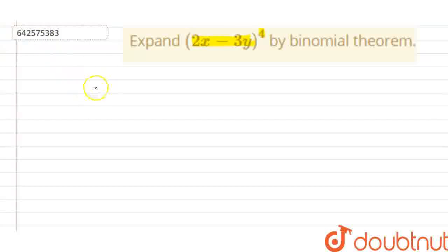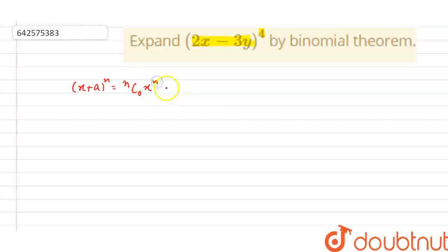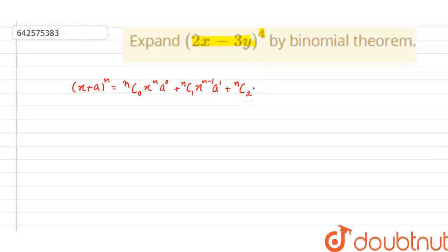Now, we know that (x + a) whole raised to power n is expanded by the binomial theorem as: nC0 · x^n · a^0 + nC1 · x^(n-1) · a^1 + nC2 · x^(n-2) · a^2, and so on till nCn · x^0 · a^n.